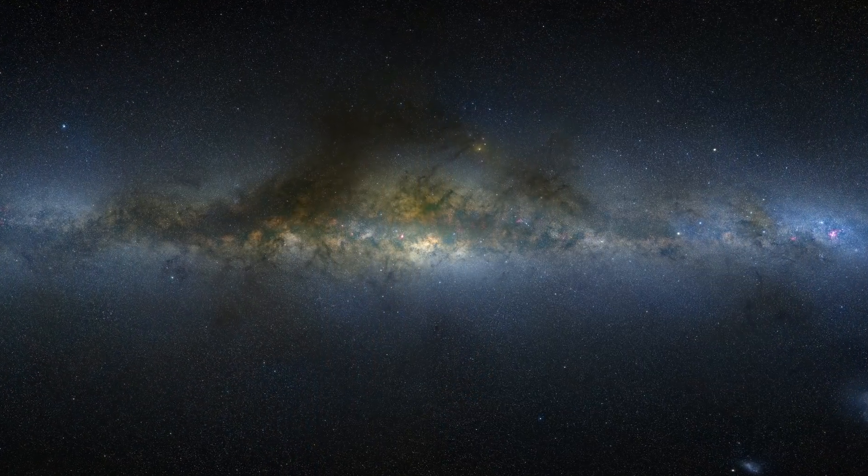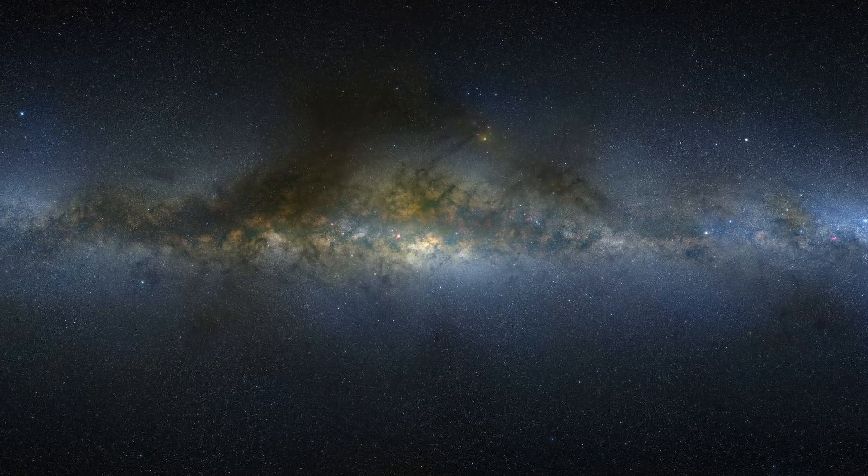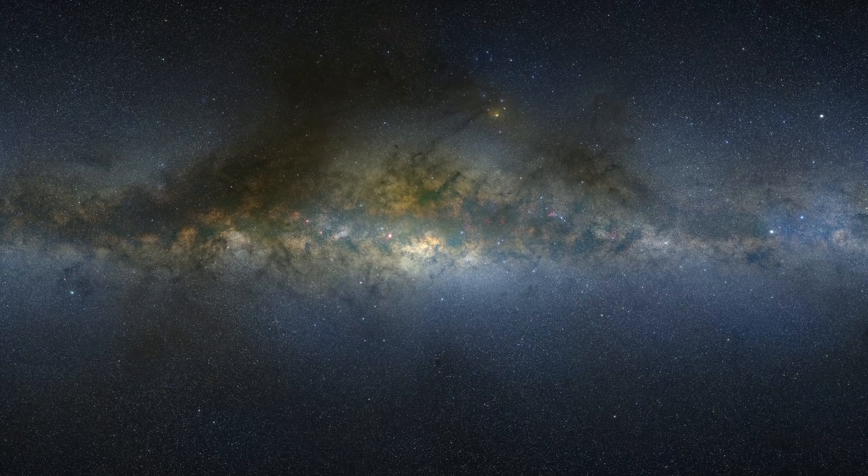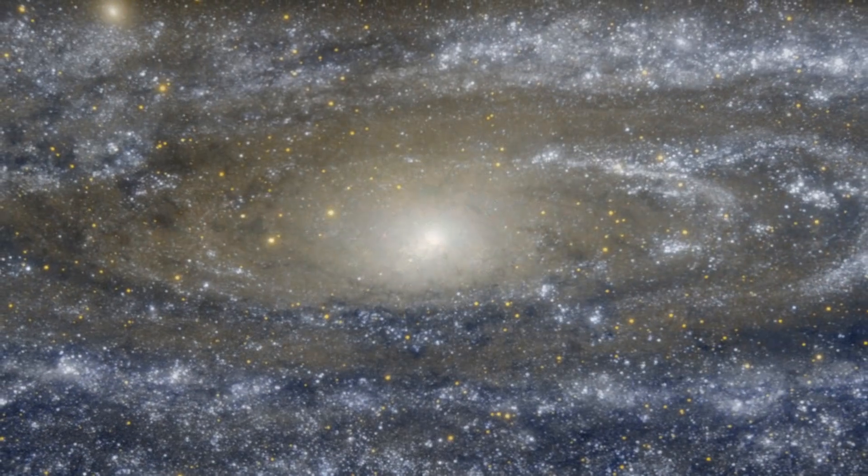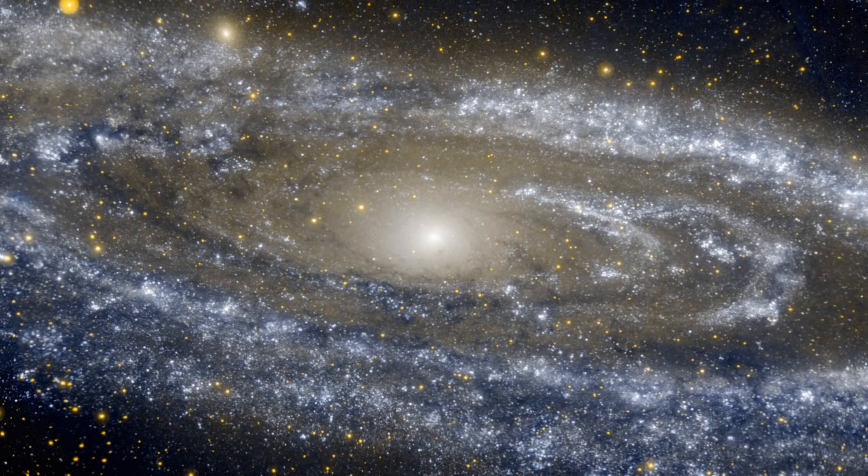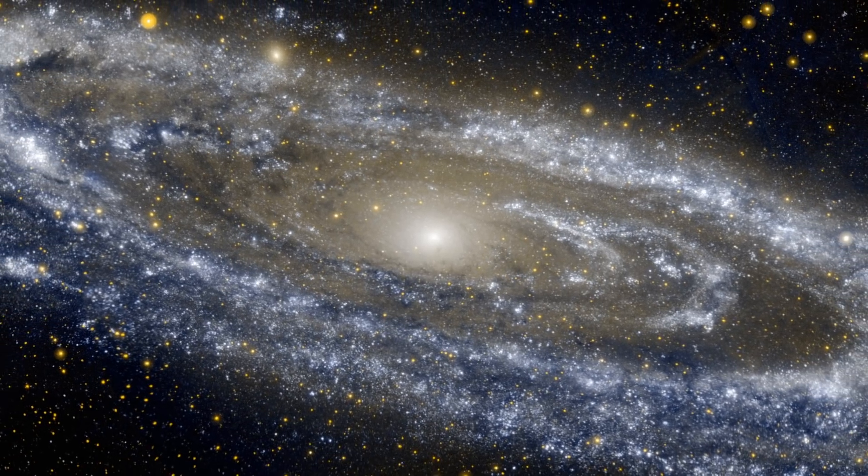Those monster objects are found in the hearts of most galaxies, like our Milky Way, but their slower evolution over millions or billions of years is impossible to detect on human timescales. Stellar mass black holes, on the other hand, evolve much more quickly.